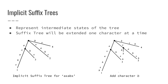These implicit suffix trees represent intermediate states of the tree. Within each step of the algorithm, we're going to be focusing on these implicit suffix trees, and within each step the suffix tree will be extended one character at a time. Looking at the left, we have an implicit suffix tree for AXABX, and then we will extend the suffix tree by one character by adding character B.